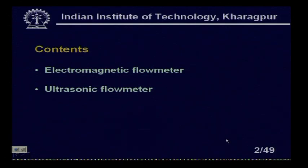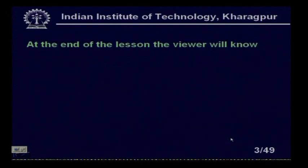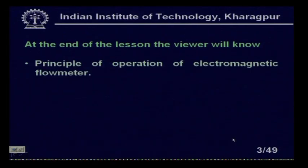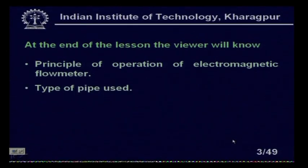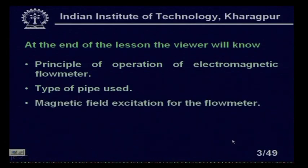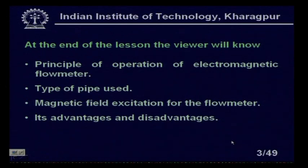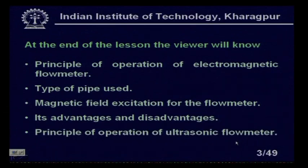At the end of this lesson, the viewer will know the principle of operation of electromagnetic flow meter, the type of pipe used, because various types of pipe have to be used, the magnetic field excitation for the flow meters, the advantages and disadvantages, and the principle of operation of ultrasonic flow meter. These will be covered one by one.